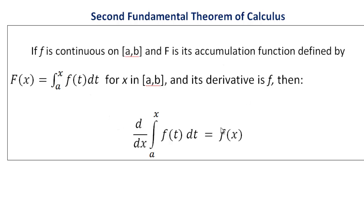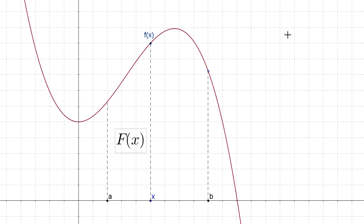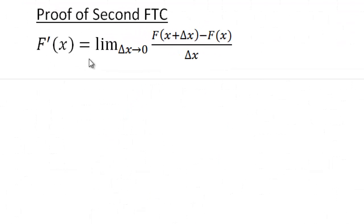We're going to prove the second fundamental theorem of calculus first, then use it to prove the first. In our proof, we let capital F of x be the area under the curve f of t. Here, t is our variable and x is just some point along the interval from a to b. Capital F of x is the amount of area between a and x underneath this curve. To take the derivative of capital F of x, we use the limit definition: the limit as delta x approaches 0 of capital F of x plus delta x minus capital F of x, all over delta x.